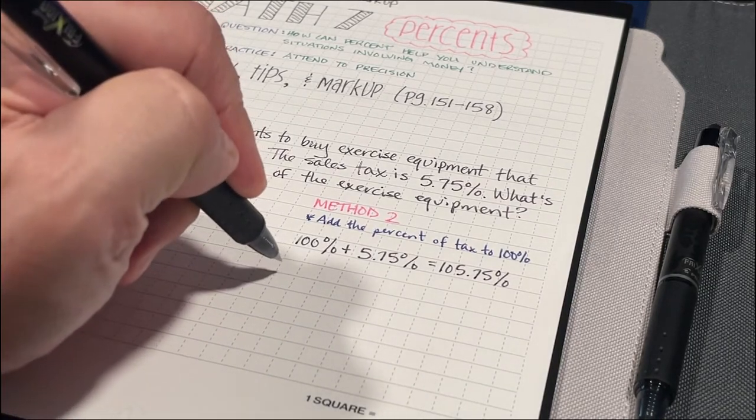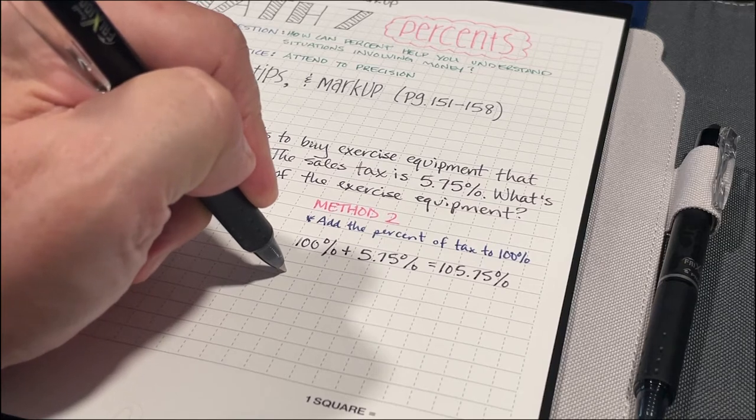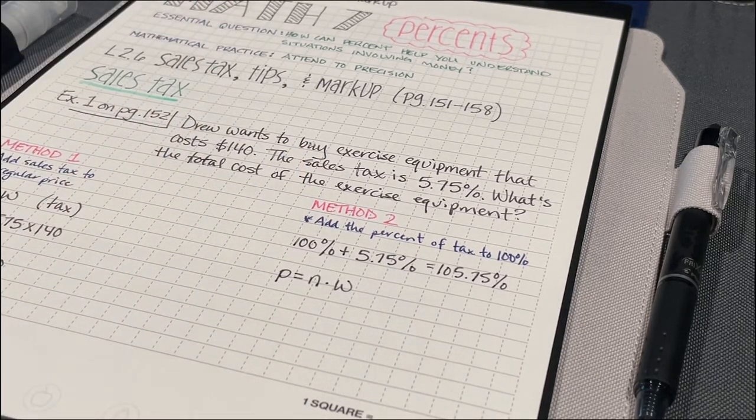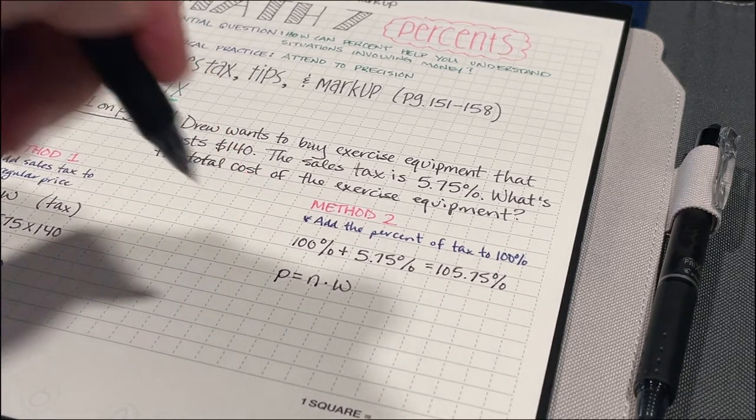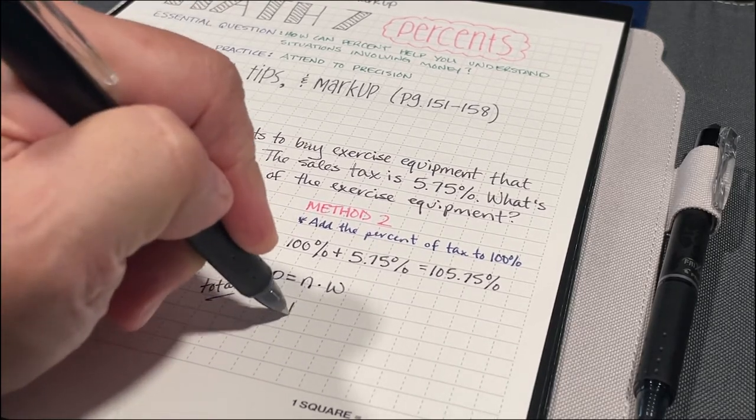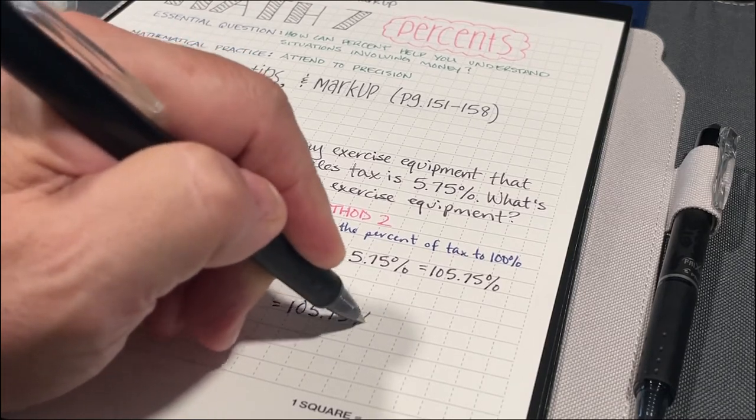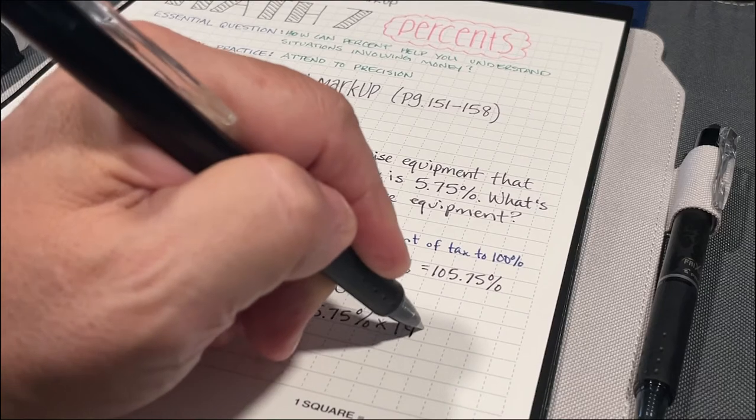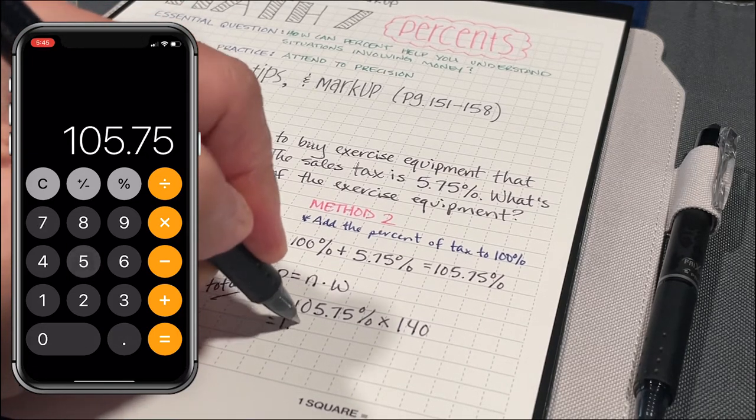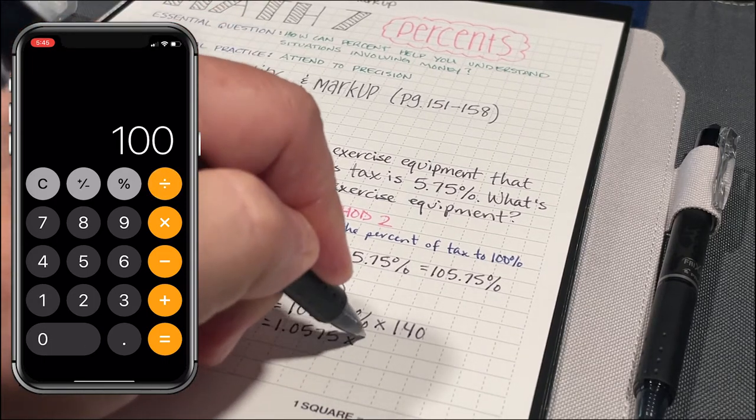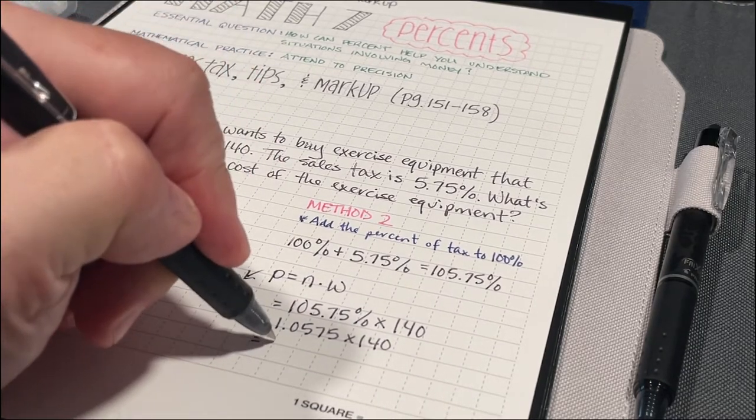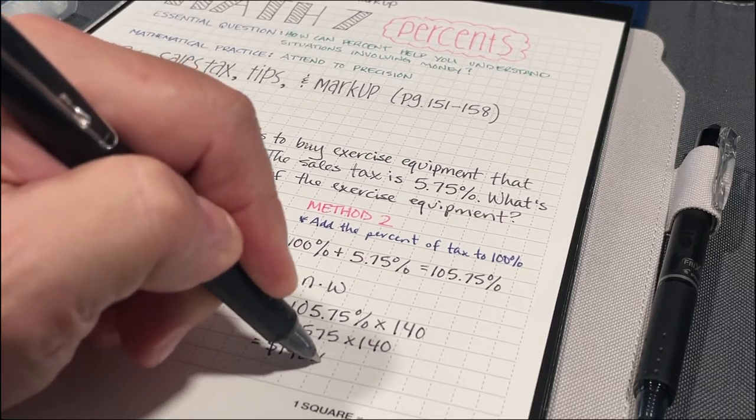So I can say that I've got my part equals my percent times my whole. This part is going to end up being my total. So that's going to be 105.75% times $140. Well, 105.75% is the same as 1.0575. I'm going to multiply that by 140. And I'm going to get my total cost of $148.05.